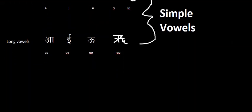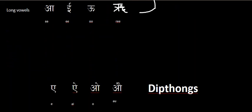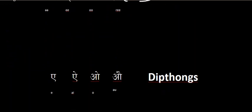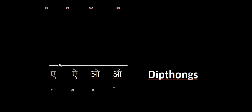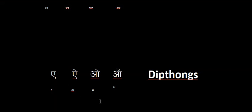Now moving on to the diphthongs. The diphthongs are: e, i, u, and au. Those are your diphthongs.